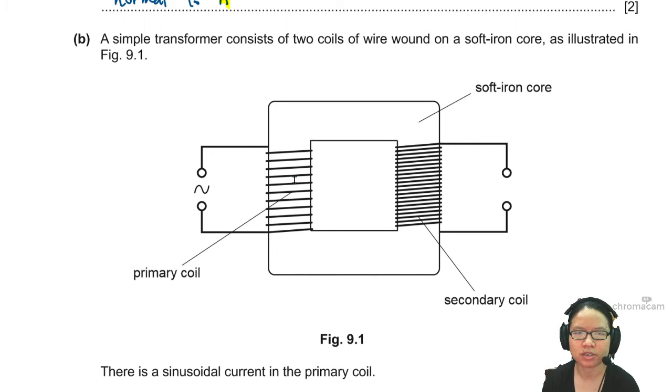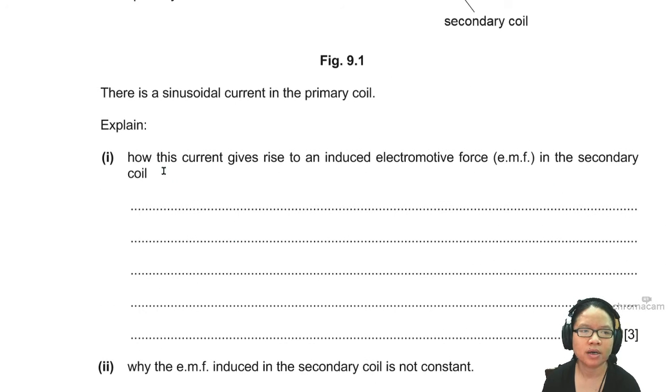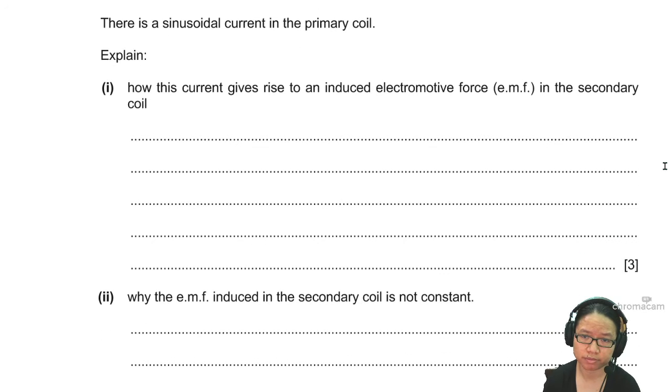A simple transformer consists of two coils of wires wound around a soft iron core, as usual. There's sinusoidal current in the primary coil. Explain how this current gives rise to EMF in the secondary coil.